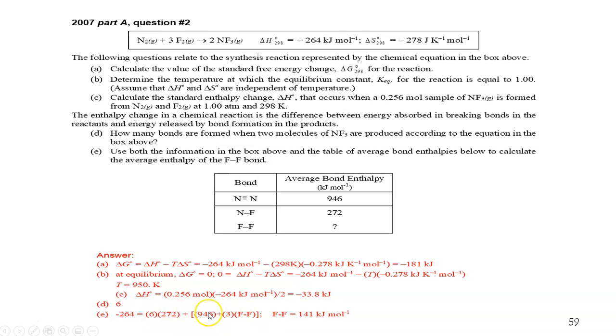These values here, the one that you're making, the NF, the six times this, there should be a negative there. That's exothermic. There should be a negative right there. I assume that when they did everything right, F to F equals 141. Note the minor typo.